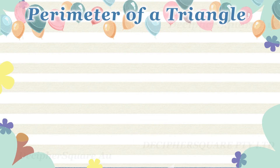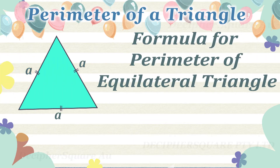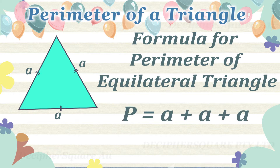In the case of an equilateral triangle, all three sides are equal, and so the perimeter of an equilateral triangle is three times the length of each side. The formula for the perimeter of an equilateral triangle is as shown.